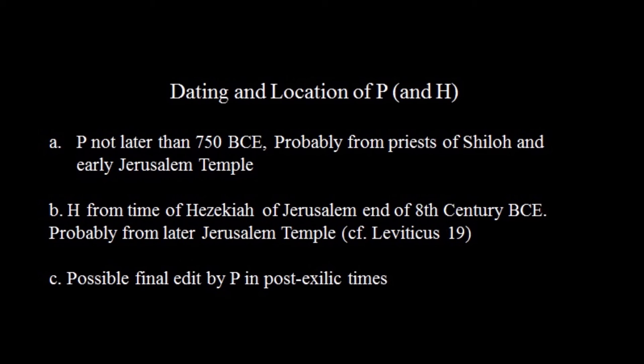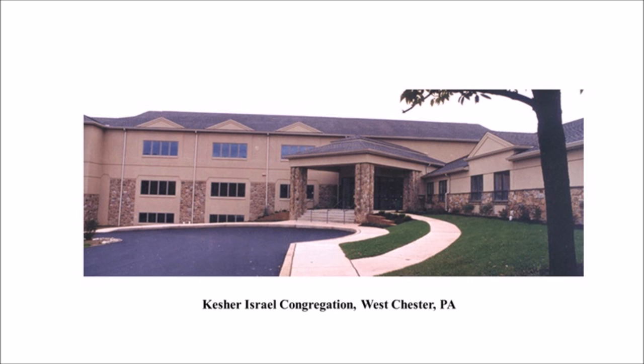Where was Shiloh? It's northeast of Jerusalem. They have found the remains of an extensive Israelite ritual compound there, though where the temple stood the Byzantines built a church, clearing out evidence of what the Shiloh temple looked like. They have an extensive ritual compound around where the temple would have been. That's where Samuel gets his calling — the Shiloh temple is referred to as a temple, not a tabernacle. Milgram believes H comes from the time of Hezekiah, at the end of the 8th century BCE, probably from the later Jerusalem temple, with a final edit in post-exilic times when the whole Torah was being edited together. The P people ended up producing the Torah. We'll stop here and next week continue.